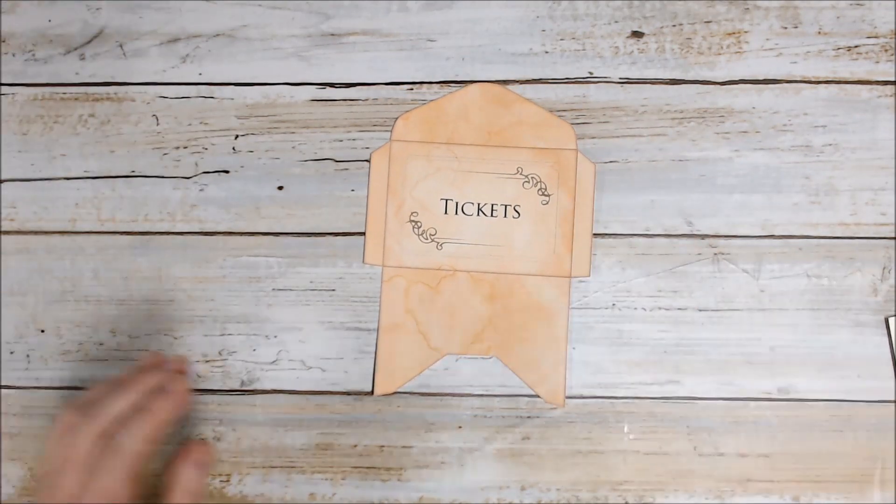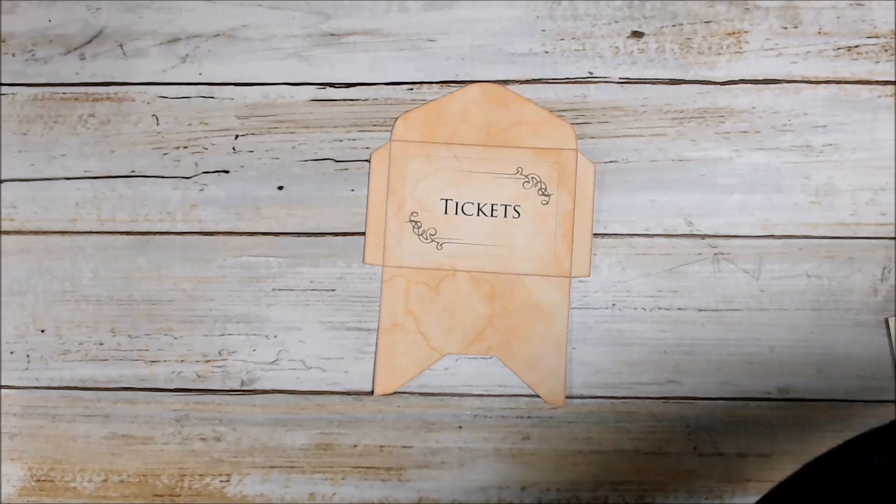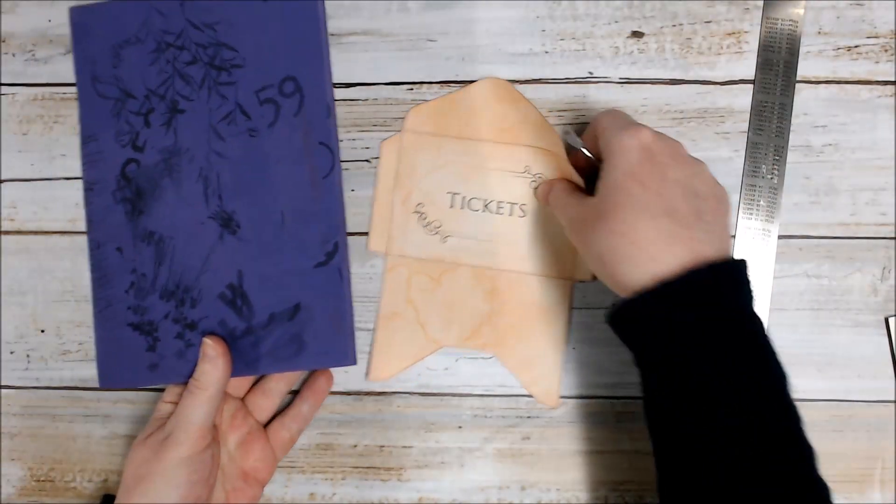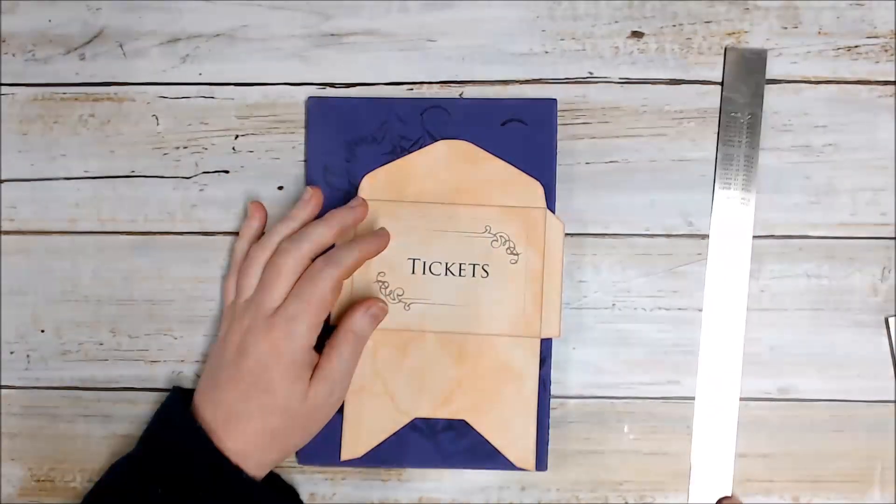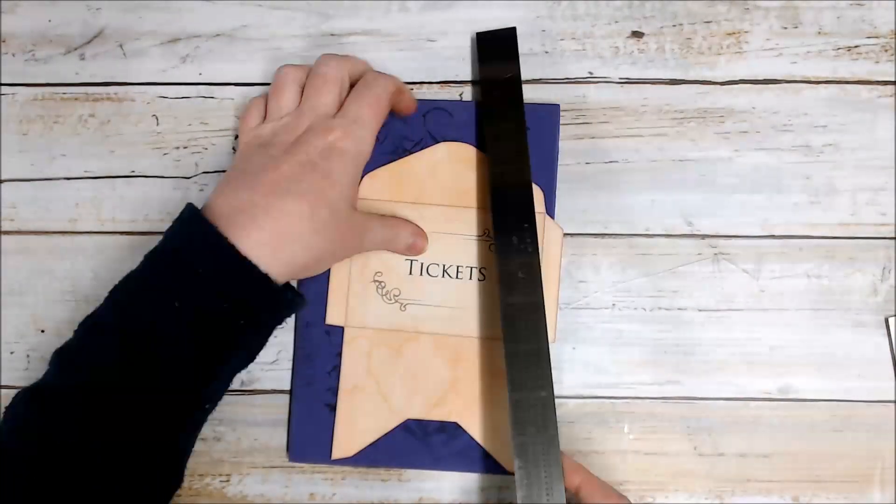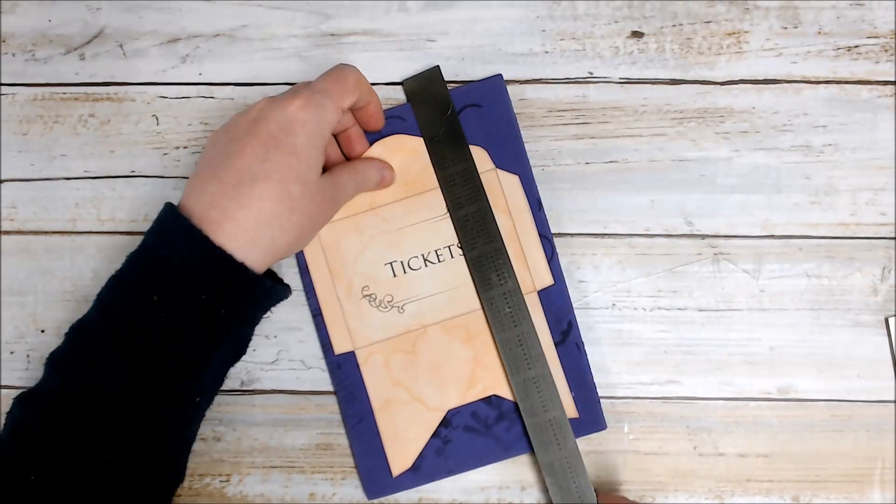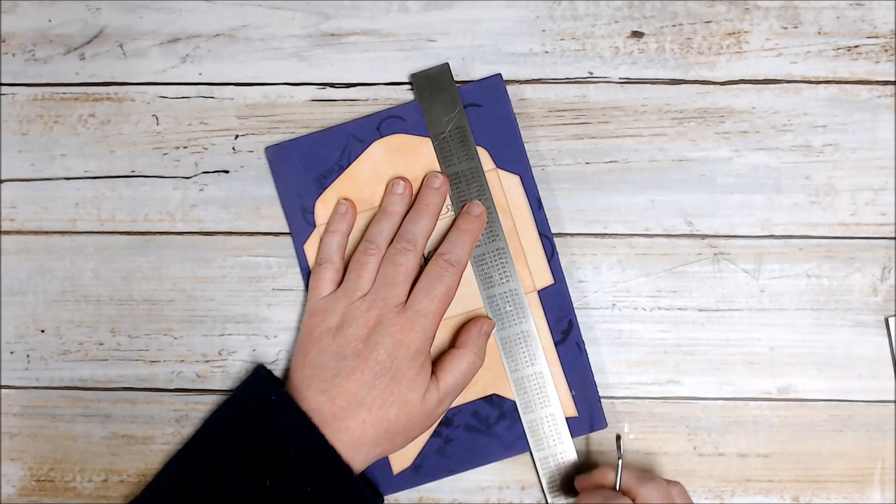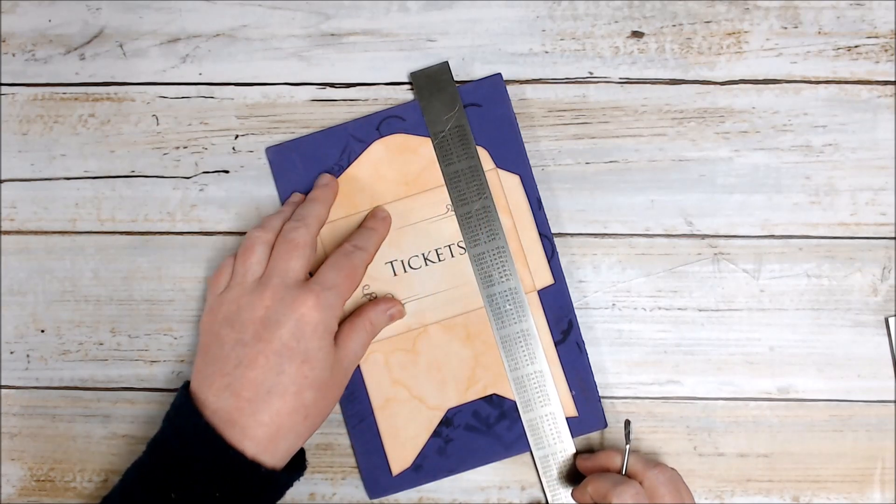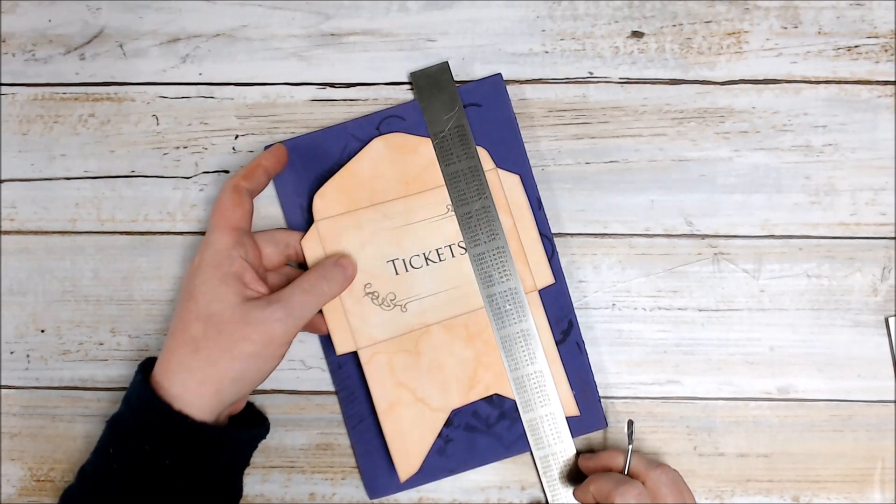Now you can use a scoreboard to score the edges of your envelope if you prefer, but what I've got here is just a piece of foam and a metal ruler. I prefer this - I just find it's easier to line up than the scoreboard for this particular job. I've just printed this out on normal copy paper for the envelope.